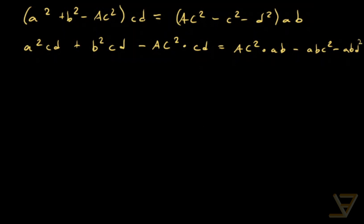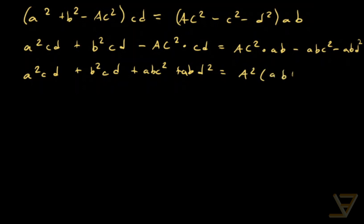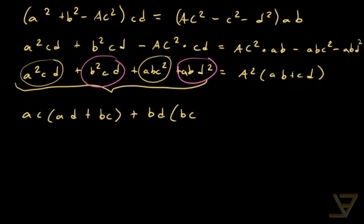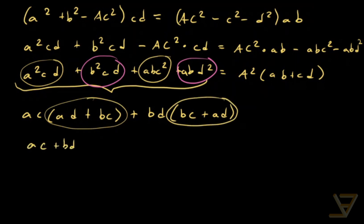Taking terms to different sides by sign, we get: a²cd + b²cd + abc² + abd² = AC²·(ab + cd). Remarkably, the left side factors nicely. Taking the first and third terms gives ac·(ad + bc), and taking the second and fourth terms gives bd·(bc + ad). So the left side factors as (ac + bd)·(ad + bc).